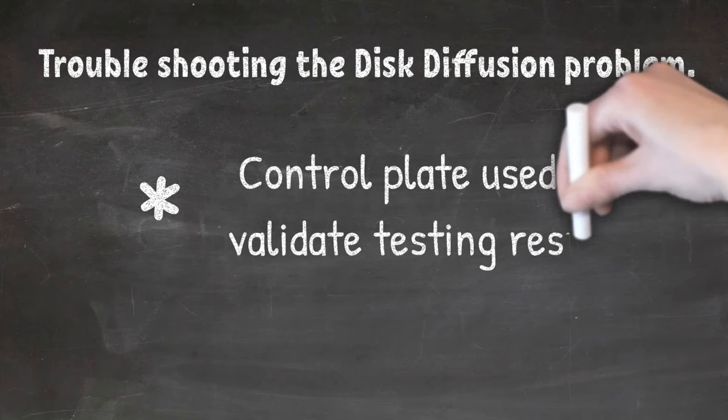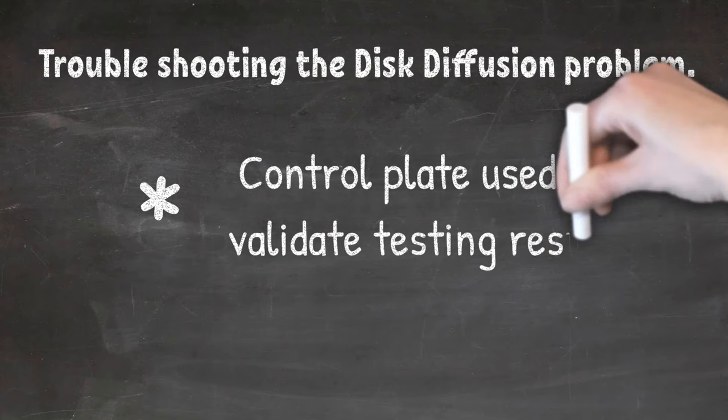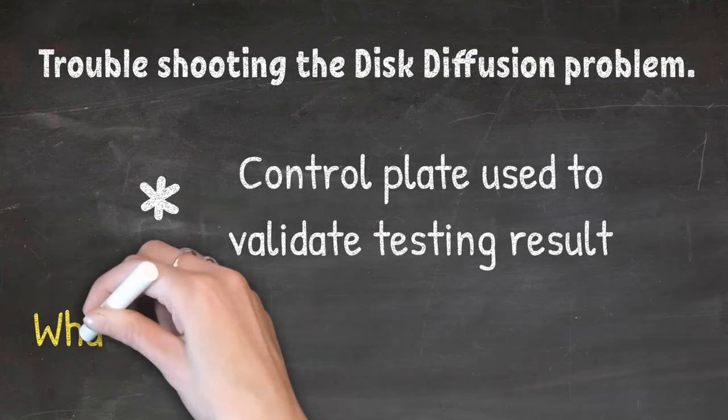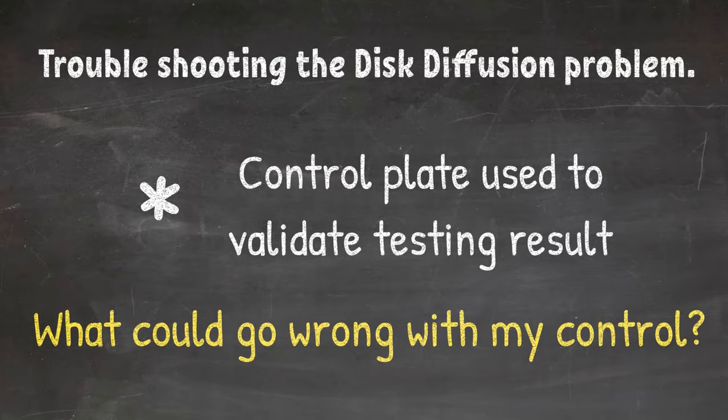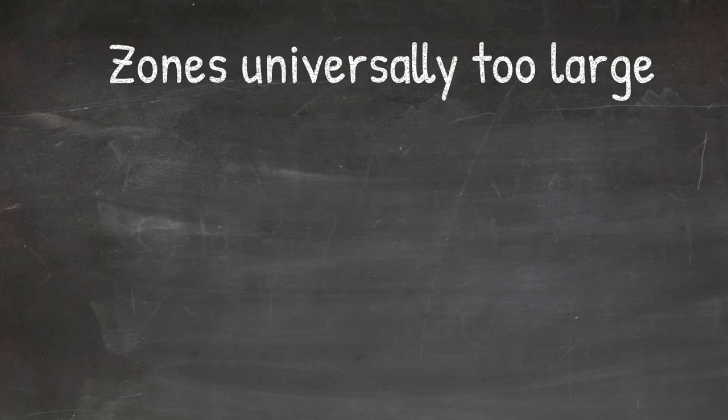Troubleshooting the disc diffusion problems. A control plate is used to make sure that the results are valid. When control fails, there are steps that can be taken to troubleshoot the disc diffusion problem. If the zones are universally too large on control plates, this means you notice that all the antibiotic discs give a larger than normal zone of inhibition. This could mean a few things.